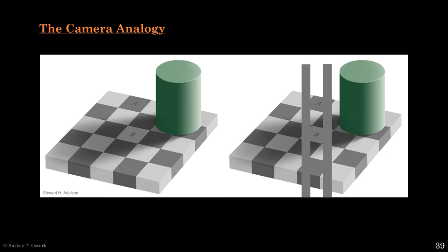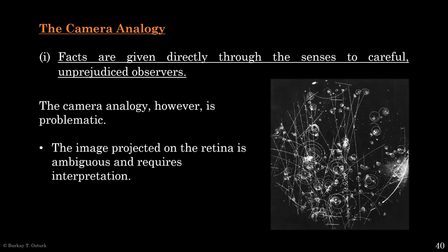Here, square B appears to be under the shadow cast by the green cylinder. So your brain unconsciously reasons for them to create the same retinal stimulation, B must be actually a lighter shade of gray.